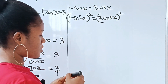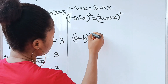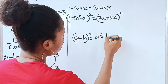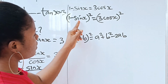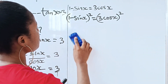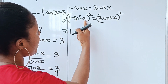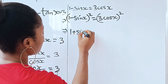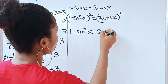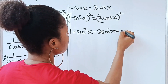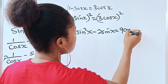Expanding (1 minus sine x) squared using the algebra identity (a minus b) squared equals a squared plus b squared minus 2ab, where a is 1 and b is sine x: we get 1 squared plus sine squared x minus 2 times 1 times sine x, which is 1 plus sine squared x minus 2 sine x. The right side gives us 3 squared times cos squared x, which is 9 cos squared x.